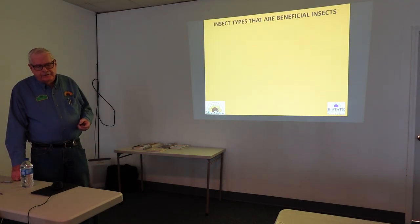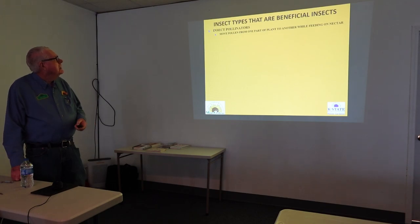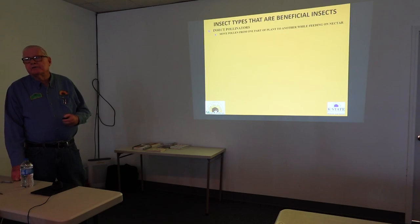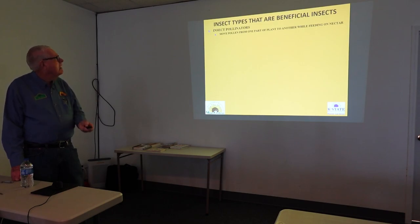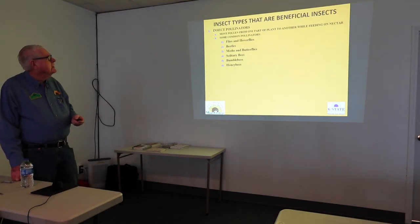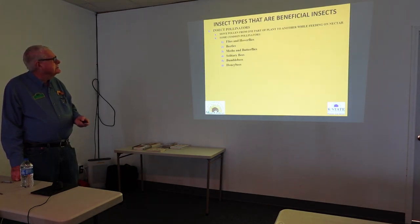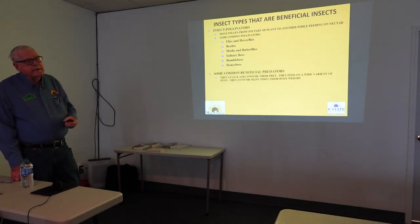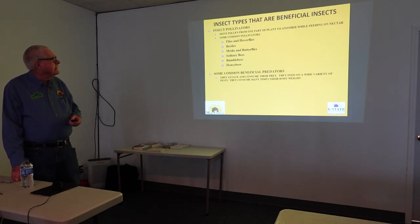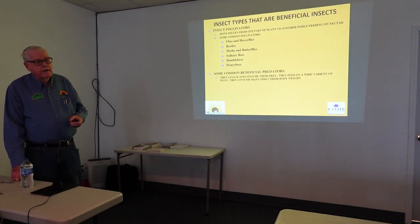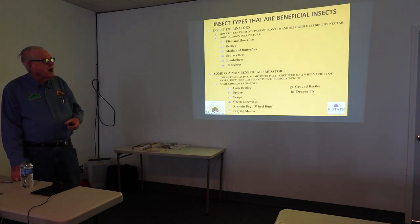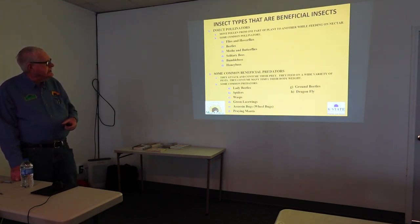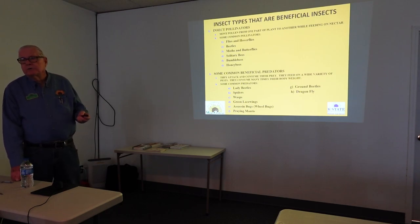I've categorized the beneficials into two categories. First are the pollinators — insects that move from one part of a plant to another plant to pollinate while feeding on nectar. Common pollinators include flies and hoverflies, beetles, moths, butterflies, solitary bees, bumble bees, and honey bees. The other category is beneficial predators — they attack their prey and feed on a wide variety of pests, sometimes consuming many times their body weight. Common ones include lady beetles, spiders, wasps, green lacewings, assassin bugs, praying mantis, ground beetles, and dragonflies.